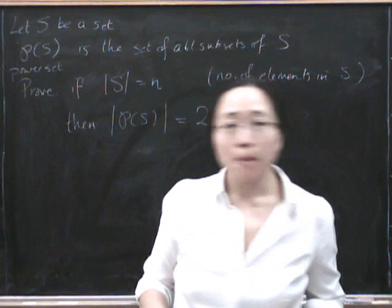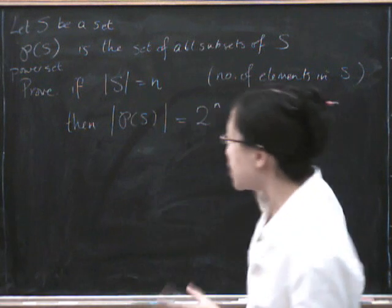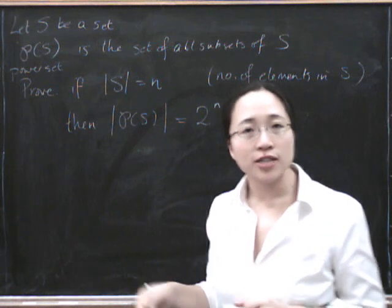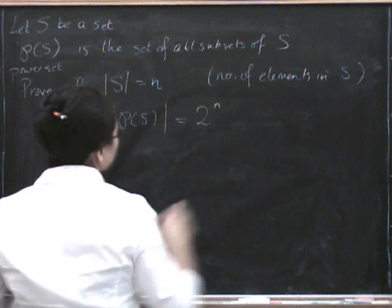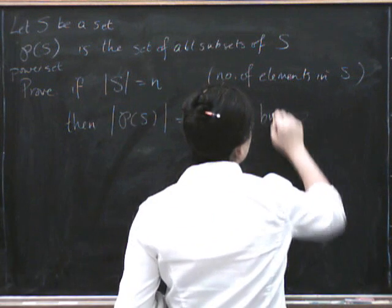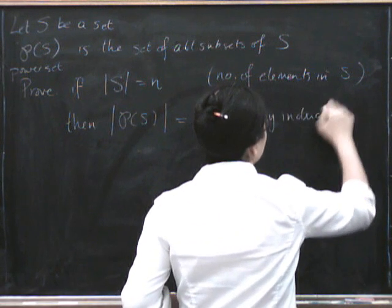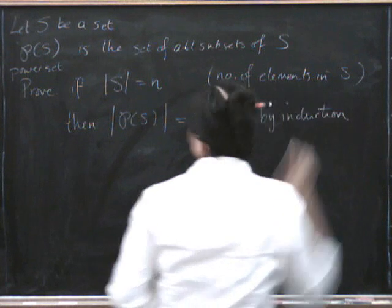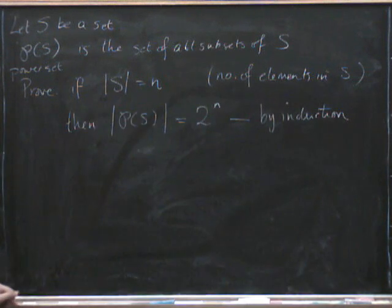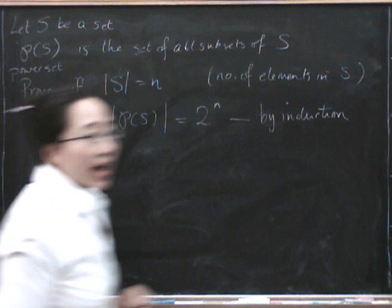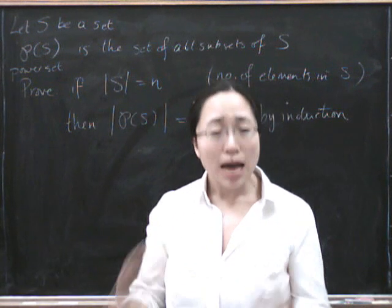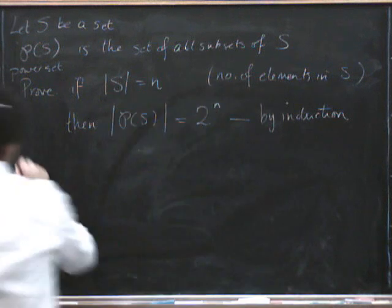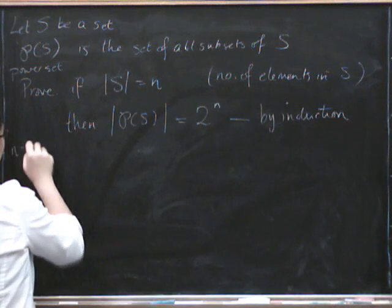So you can prove it by just reasoning about what a subset looks like, but we're going to prove it by induction. I'm going to do it by induction. So in fact, we can start with n equals 0 here, because if our set has 0 elements in it, then it's the empty set. So let's start with n equals 0.